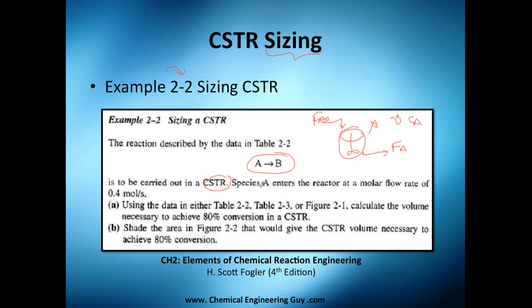Species A enters the reactor at a molar flow rate of FA0 equals 0.4 moles per second. Now they tell you letter A, please use the data either in this table or this table or this figure, which you can find gladly in this book, which is pretty cool.